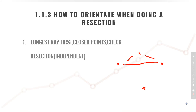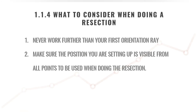What to consider when doing a resection: never work further than your first orientation ray — this is critically important. Number two: make sure the position you're setting up is visible from all the points you're going to use. Don't just move your total station around assuming you'll see all the points — look at the points, find the beacons, and move accordingly. Always ensure that from where you place your total station, you can see all your known points that you want to use for orientation.